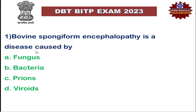Prions are infectious agents just like viruses, but unlike viruses and bacteria which have specific genetic material, prions don't have any kind of genetic material. They are simply abnormal and pathogenic proteins. They can easily infect a healthy individual and convert a normal cellular protein into a prion protein. These prion proteins are highly abundant in the brain, so diseases caused by prion proteins affect the nervous system.